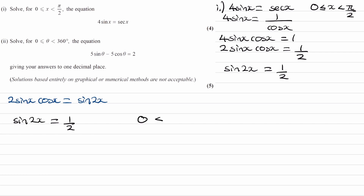So the domain becomes 0 is less than or equal to 2x, which is less than pi. Now we solve this equation in this domain. Inverse sine of 1 half gives us pi over 6. To work out the next angle in this domain, we do pi minus the principal value — you can always do that for sine functions — giving us our second angle.